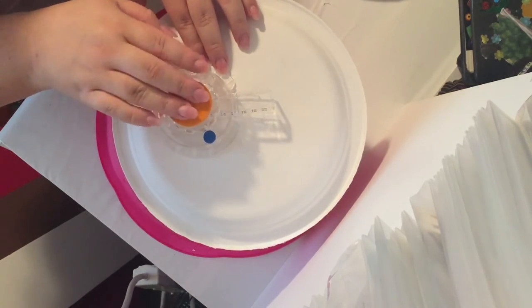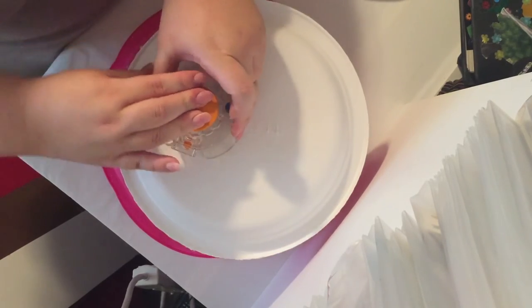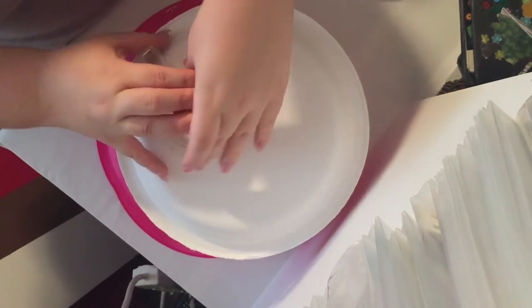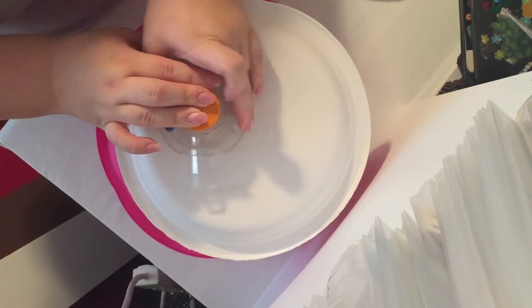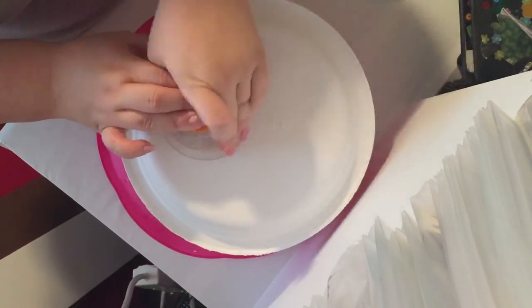Now you're going to place your circle cutter down. With the circle cutter, you hold the orange part down and circle it around. You're just going to go around twice to make sure it cuts through the paper plate.